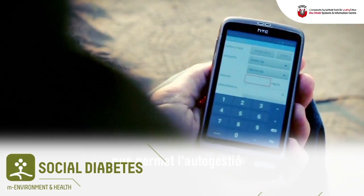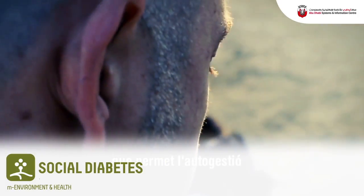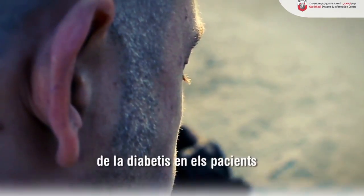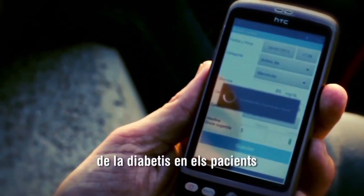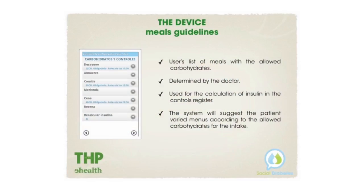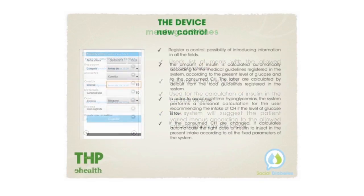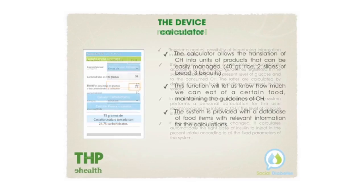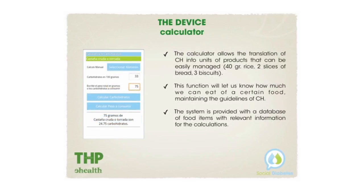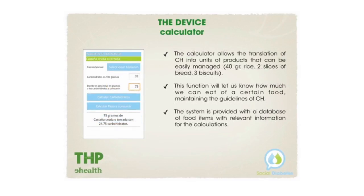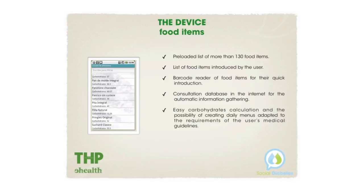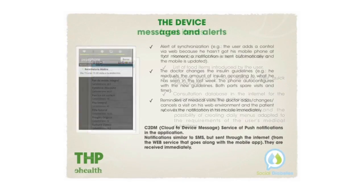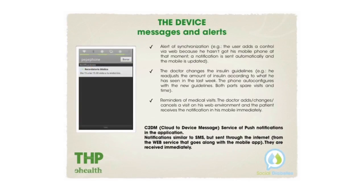Social Diabetes is a system for self-management of diabetes mellitus type 1 using statistical information and data about the patient's actual behavior. Factors like food intake and exercise are logged into the system, which in turn recommends the insulin dose based on these parameters.